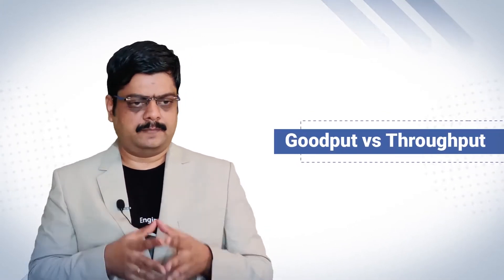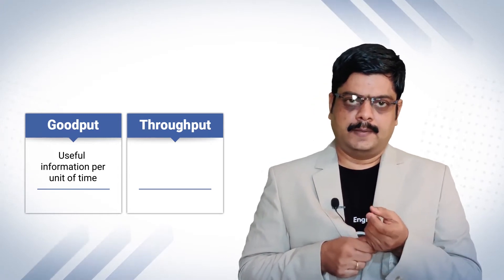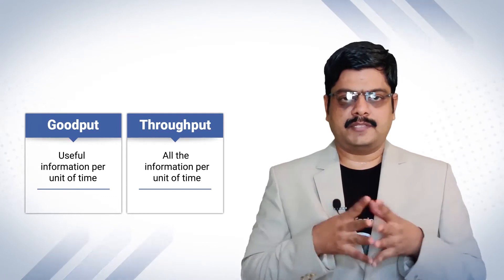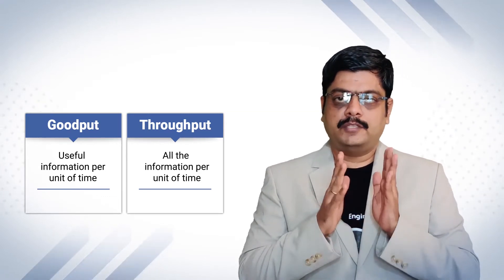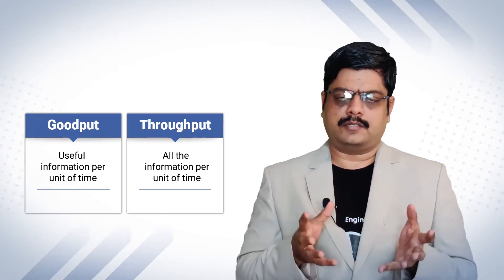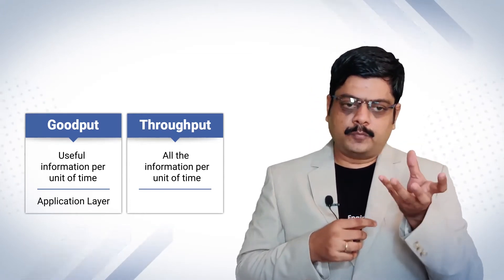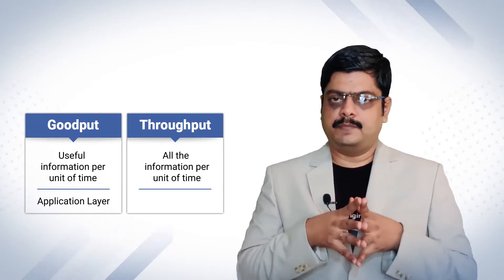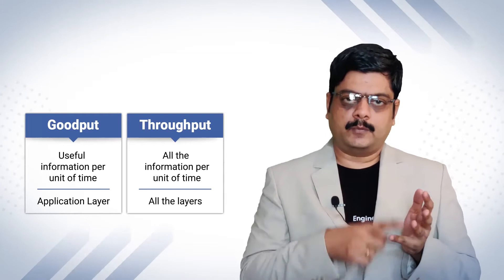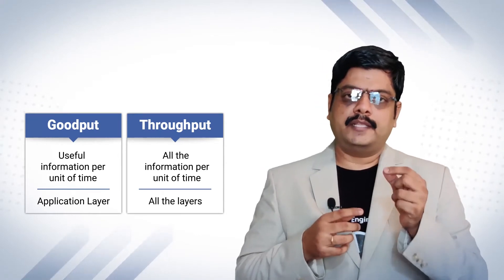There is one more term called as goodput, which is slightly related to throughput. Goodput is the number of useful information delivered by the network to a certain destination per unit of time. Throughput can be anything sent from one node to another node, whereas goodput is only useful information sent in a given unit of time. Throughput covers all data flowing from source to destination whether it is useful or not. Goodput is the application layer throughput — throughput can be measured at all layers (network, transport, or application), whereas goodput can be measured only at the application layer.